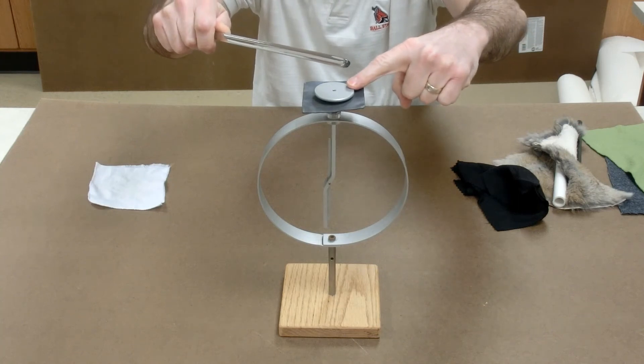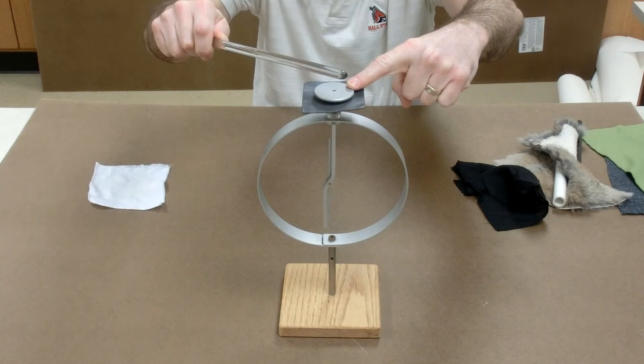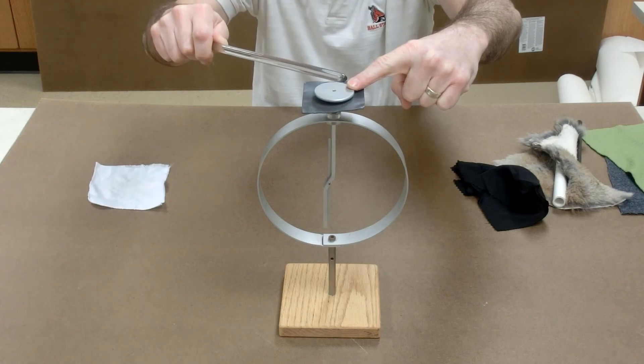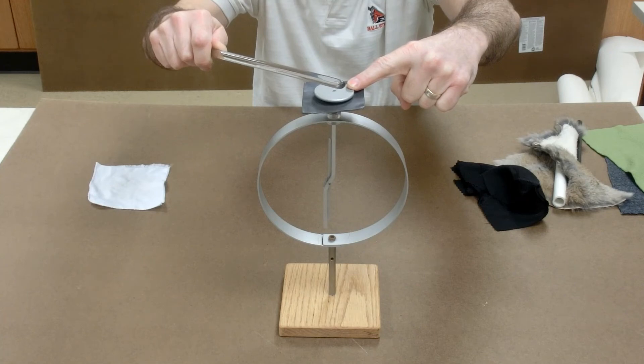If you ground it at the same time, the positively charged glass rod would pull electrons from my finger into the knob. So electrons are actually coming into the electroscope, making the electroscope negative.